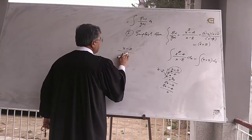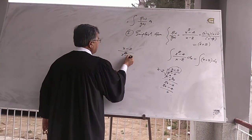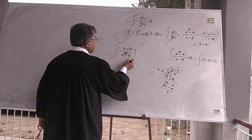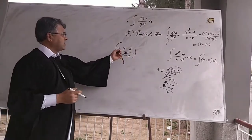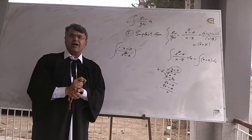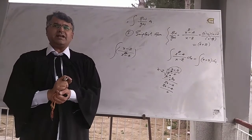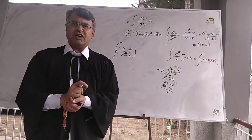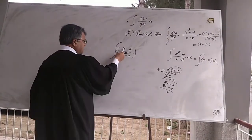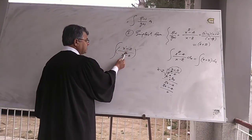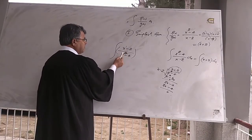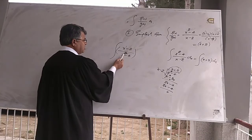For example, when the function is in the form of x minus 2 divided by x squared minus 4 and we have to integrate this function: x minus 2 is a polynomial of degree 1 and x squared minus 4 is a polynomial of degree 2. We cannot divide the polynomial of degree 1 by the polynomial of degree 2.